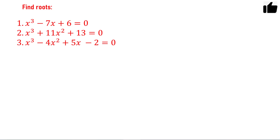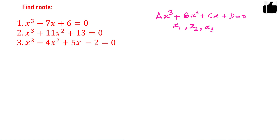Hello friends. In this video I will discuss a method by which you can quickly solve cubic equations. A standard form of a cubic equation can be written as ax³ plus bx² plus cx plus d equals zero. This equation has three roots: x1, x2, and x3. The sum of roots x1 plus x2 plus x3 equals minus b by a, and the product of all roots x1 times x2 times x3 equals d divided by a.